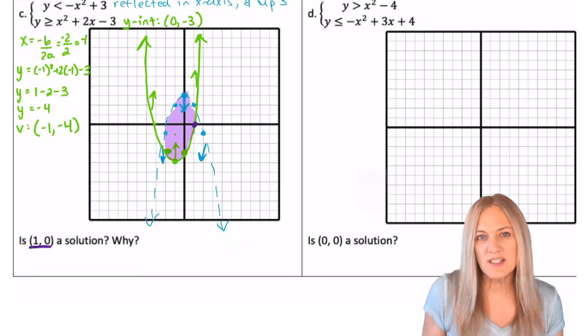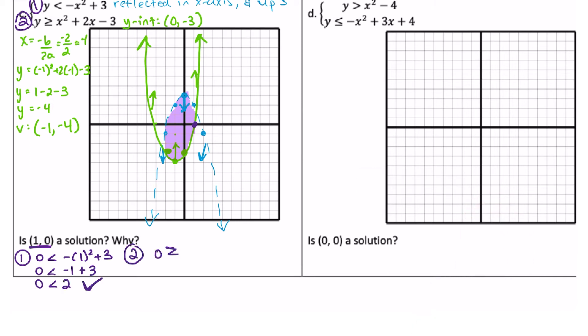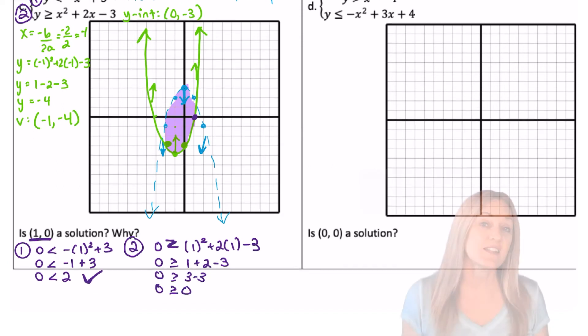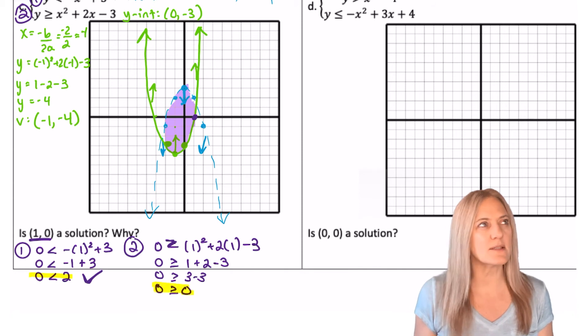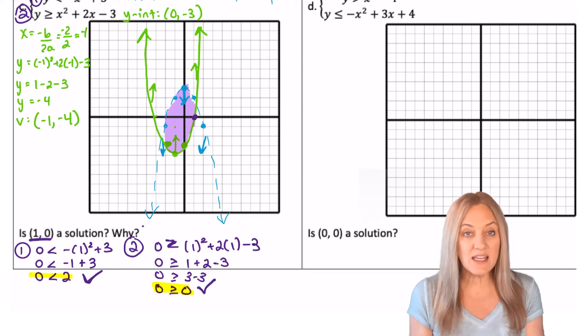Is 1, 0 a solution? It appears to be, but let's check it algebraically. 0 less than 2? Check. 0 greater than or equal to 0? Yes, it only has to satisfy one of the conditions. 0 is equal to 0.